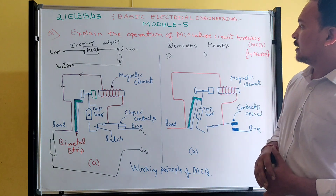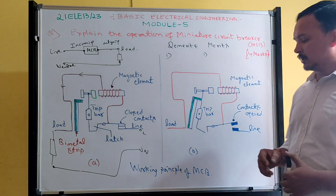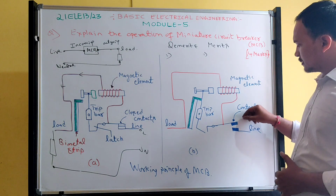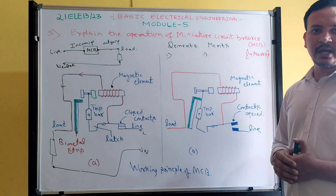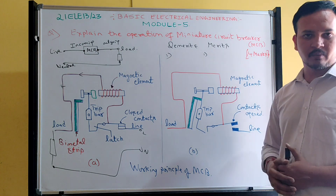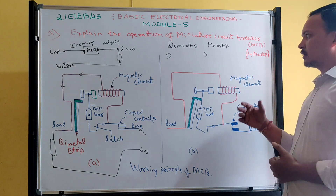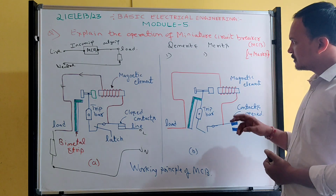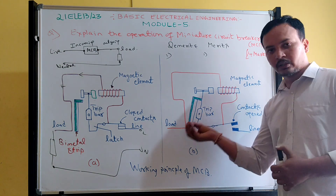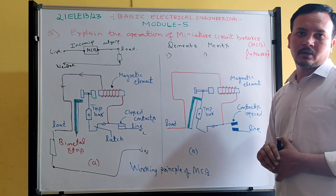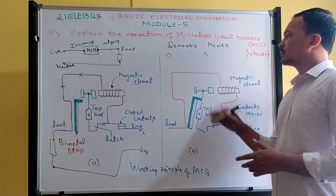Next merit: it is very simple to resume the supply. Once the fault is cleared, the operator can close the contact again — supplies get connected. Very easy to resume. We can operate manually as well as automatically. Nowadays both options are available. If you don't want automatic, you can take manual MCBs. When supply is tripped off, you can close the contact again to give supply to the load. We need to close this contact manually. Contact is open due to some fault — that is one merit.